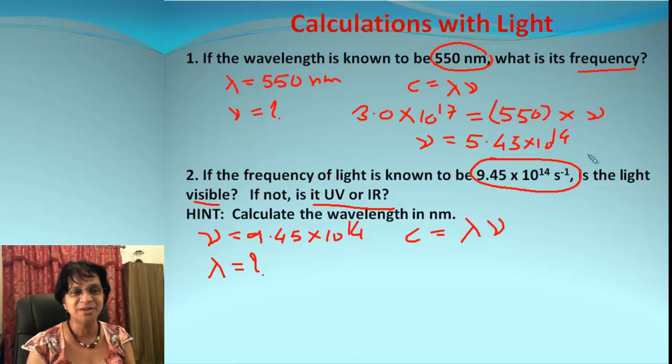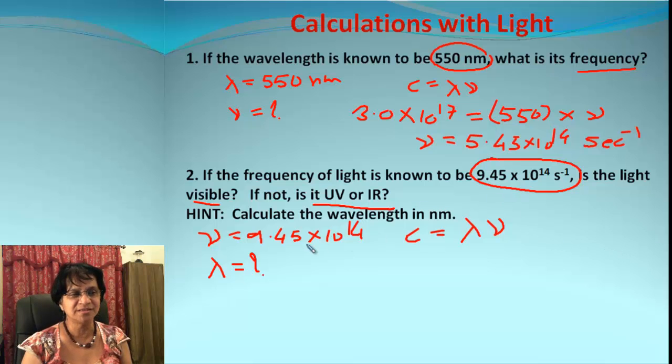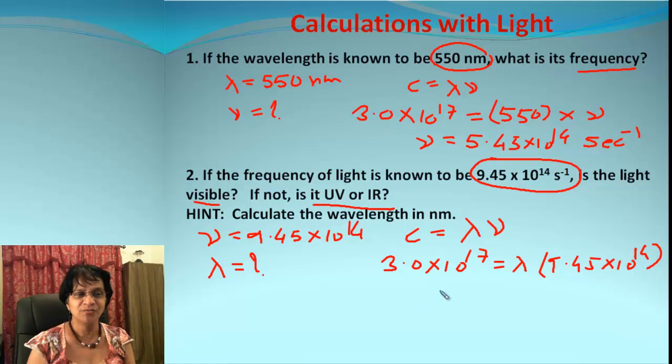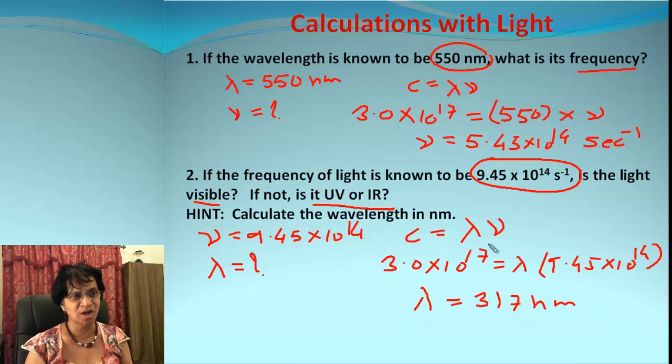Let's work on the second problem. Frequency of light is given here, and we have to find lambda. Again we will use the same equation c = λν, and we will plug the values. So we get 3.0 × 10^17 = λ × 9.45 × 10^14. When we rearrange and solve for lambda, that is 317 nanometers.